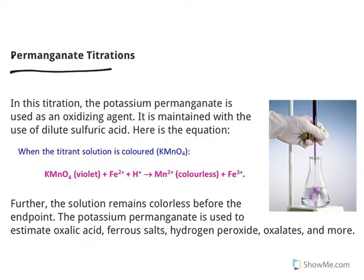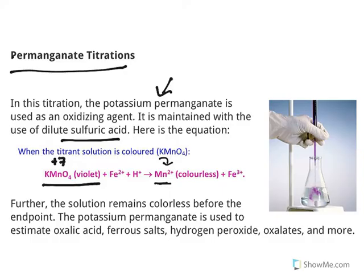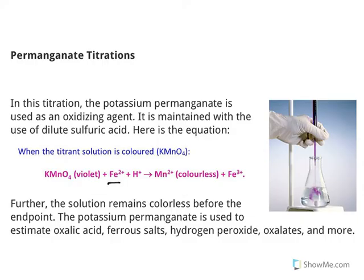Now for permanganate titration: potassium permanganate is a very powerful oxidizing agent used in the presence of dilute sulfuric acid. Potassium permanganate has a violet color, and manganese has a +7 oxidation state. In the reaction, manganese converts from +7 to +2 — it gains electrons and gets reduced, thereby oxidizing iron from +2 to +3. These titrations are carried out stoichiometrically, and the amount of potassium permanganate consumed tells you the amount of iron present.